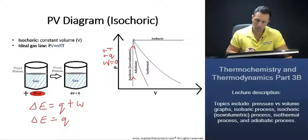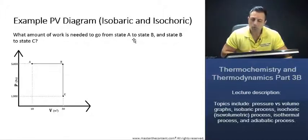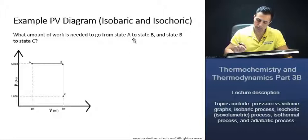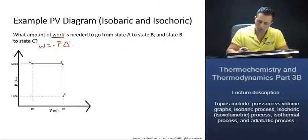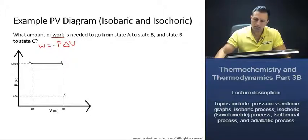Now, let's move on to our next slide and do an example. What amount of work is needed to go from state A to state B and state B to state C? If we take a look here, we're talking about work. So doing our work equation, we see that work is equal to negative pressure times change in volume. And we're going from A to B. Let's just highlight that so we know what we're working with here.